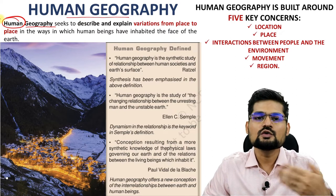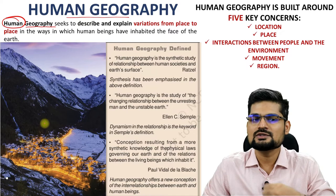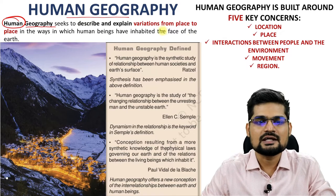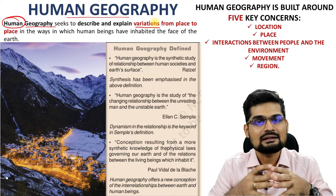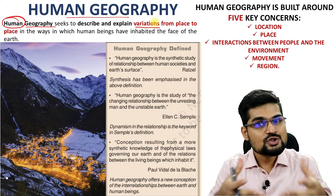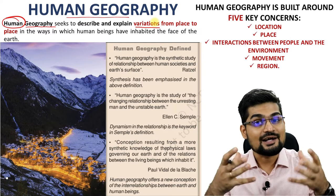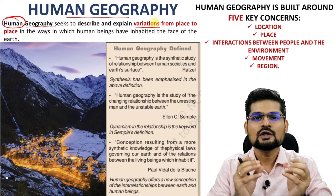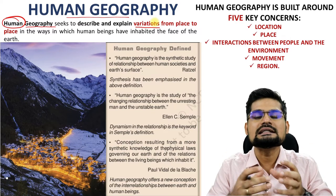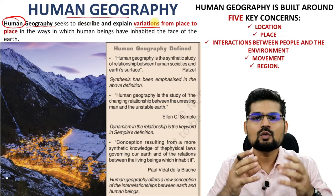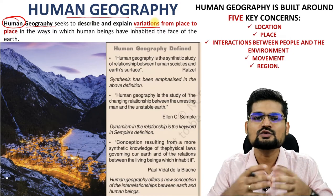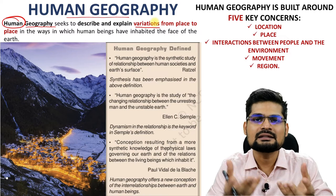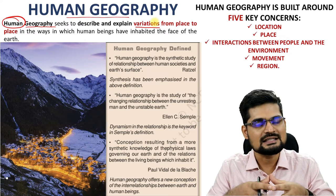What do you seek to describe in human geography? Basically the variations, the shapes, the patterns, the situations, the associations — all these things related to human-created spaces and places. What kind of places do we create, and what is the basic principle behind the creation of these places? This is the basic facet of human geography.